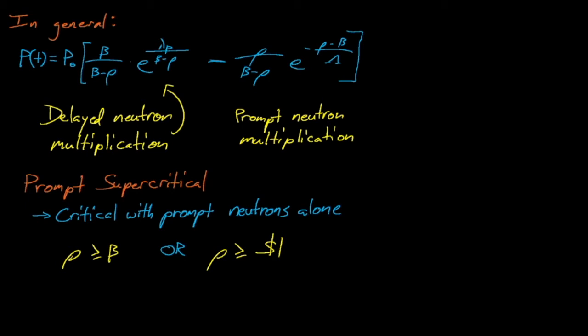The unit of dollars is often used to describe a system's reactivity, where one dollar of reactivity corresponds to one beta worth of reactivity, which is again enough reactivity to make the system go prompt supercritical. The term cents is also used to describe reactivity insertions, where one cent is just one one-hundredth of a dollar. Like the units of barns and shakes, dollars and cents are historical units that were developed by Manhattan Project scientists so that they could discuss weapons physics in public venues without divulging classified information.